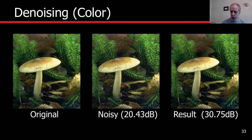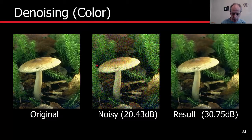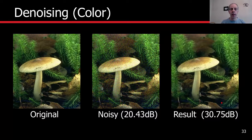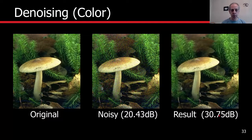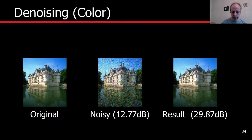Let's see some results. We always show the original just for reference, because you never have it. What you have is this noisy image. Then you run KSVD on 8x8x3 or 5x5x3 patches, depending on the patch size you decide to use, and you get a very nice result of image denoising. Here are standard measurements of peak SNR in dBs to measure the quality of the result.